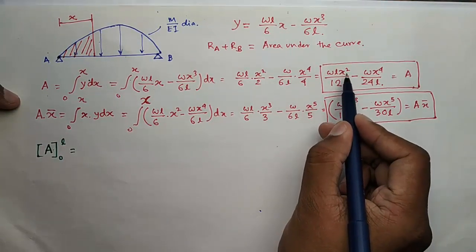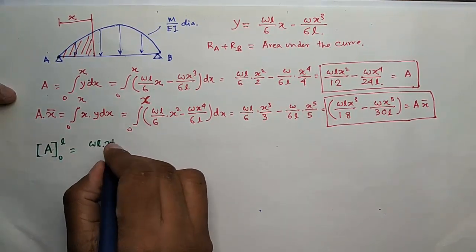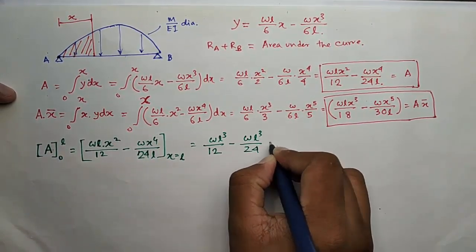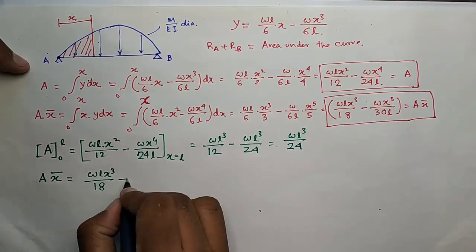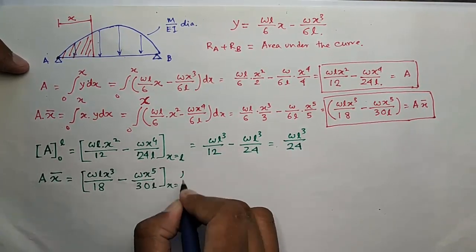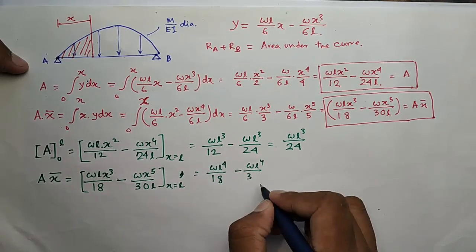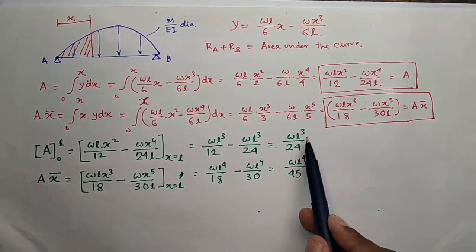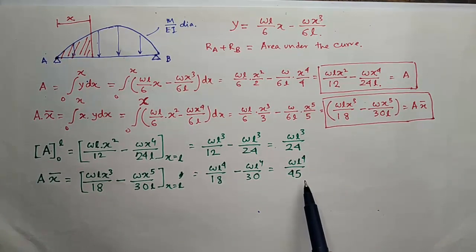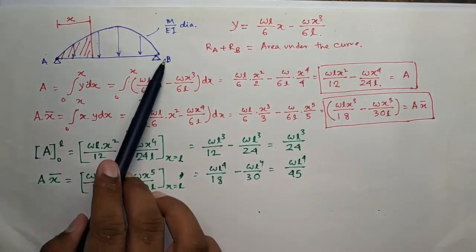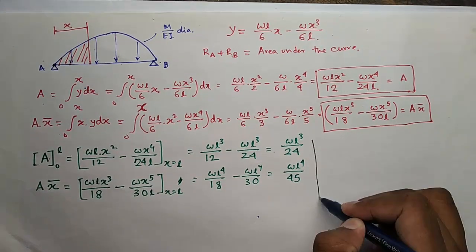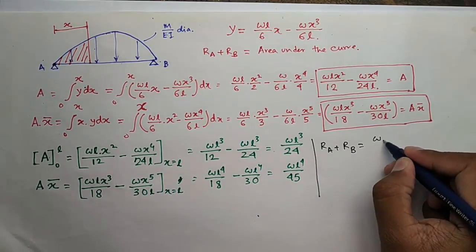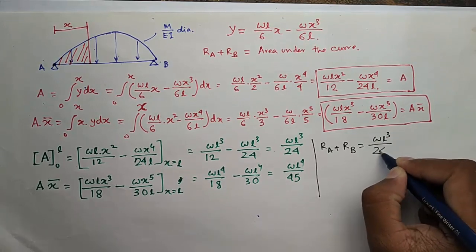Put the value of x equal to L here. So we have got the value of A, total area, and the value of A x bar for this total curve. So we have got RA plus RB equal to the area which is WL cubed by 24EI.